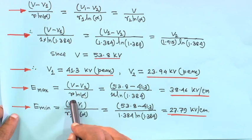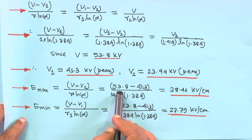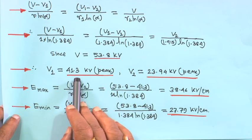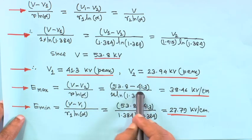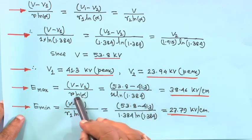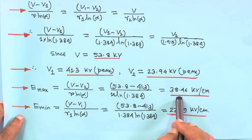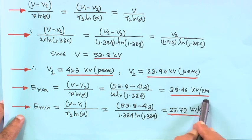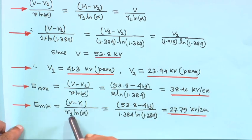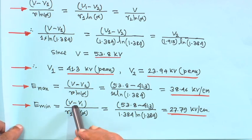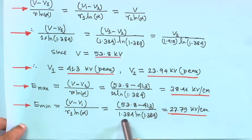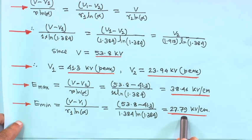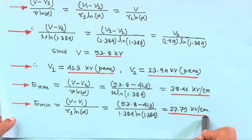E_max equals (V − V1)/(r·ln α) = (53.8 − 41.3)/(1 × ln 1.384) = 38.46 kV/cm. E_min (at r = R1) equals (V − V1)/(R1·ln α) = (53.8 − 41.3)/(1.384 × ln 1.384) = 27.79 kV/cm.